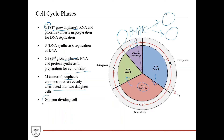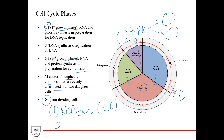The G0 phase is where cells essentially leave the cell cycle. They're not dividing or replicating their DNA—they're just stable. The cells in the G0 phase are typically cells that are not going to further divide anymore. The two famous examples of that are nervous tissue, especially in the central nervous system, and cardiac muscle.